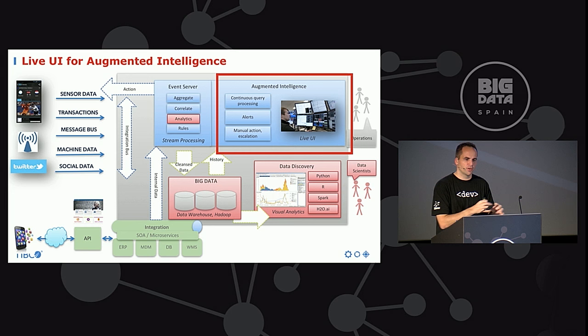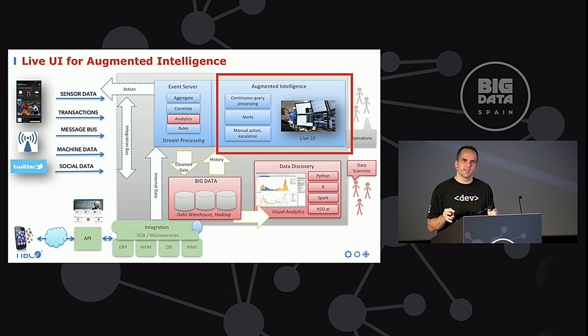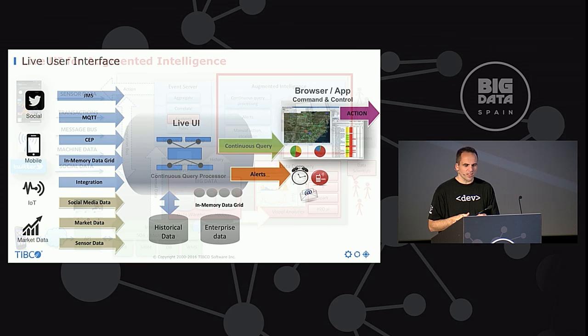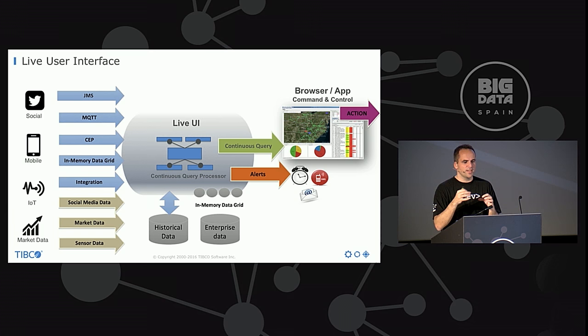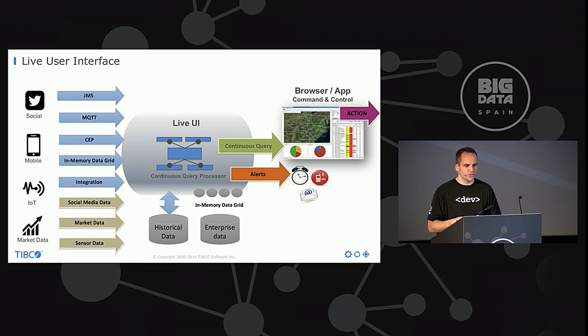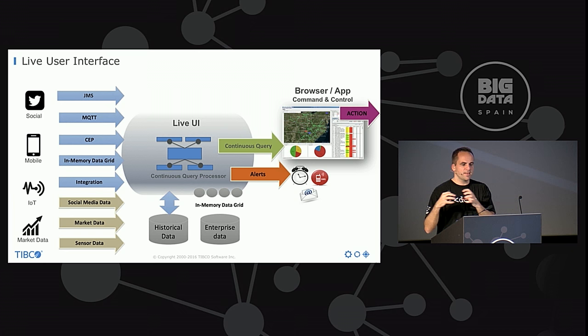No matter whether you use a framework or a product, you need some kind of augmented intelligence for humans — that's a key part of streaming analytics. Almost all customer projects I see want a human to make the most important decision. For that you need a live UI, and the key difference is that this live UI also has to be built on top of the streaming engine. You don't build just a JavaScript API sending some events — it really has to have a continuous query engine under the hood. That's very important, and therefore building it yourself is also a lot of effort.